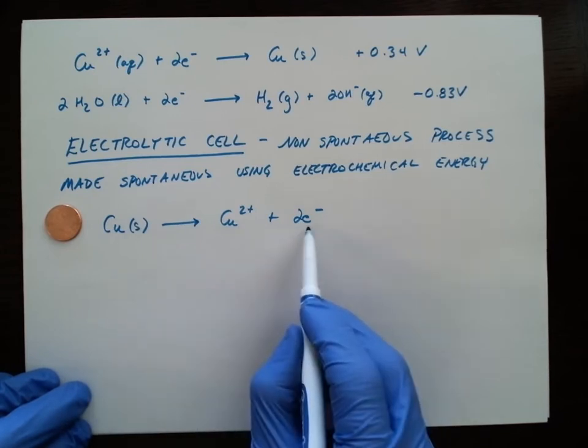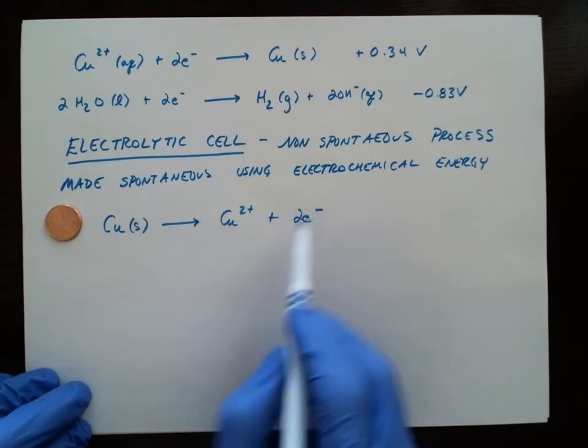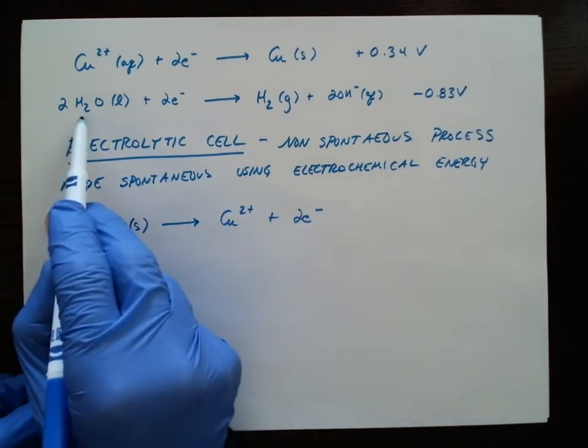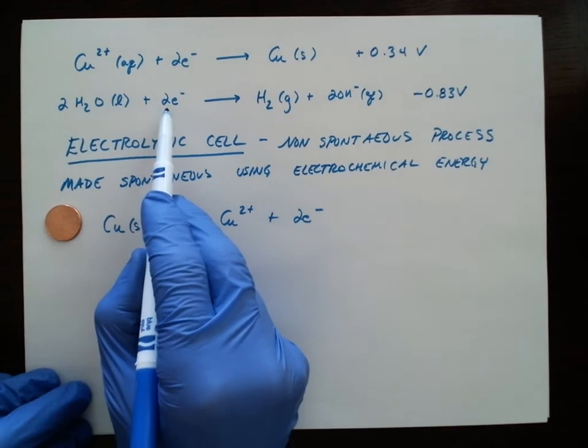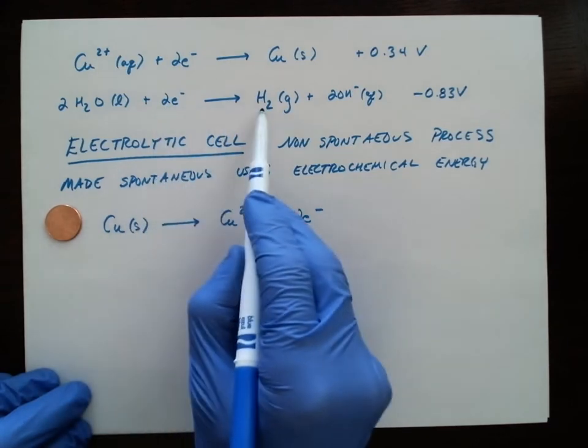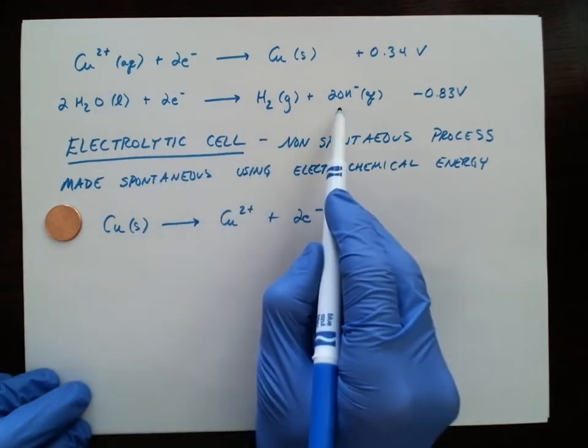Of course, those two electrons are going to need to go somewhere. And where I'm going to send them is into some water. The water will get reduced by those two electrons to hydrogen gas and hydroxide ion.